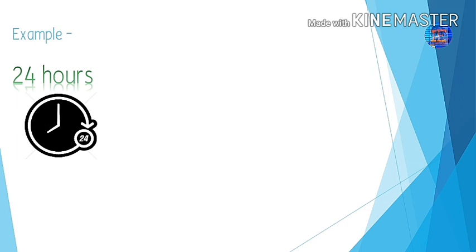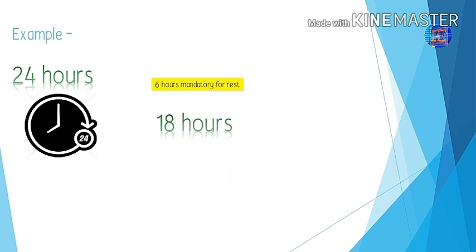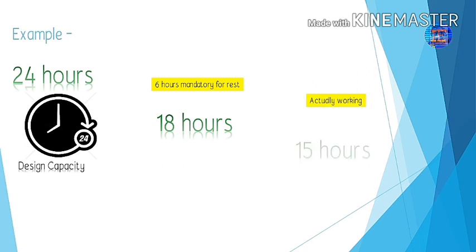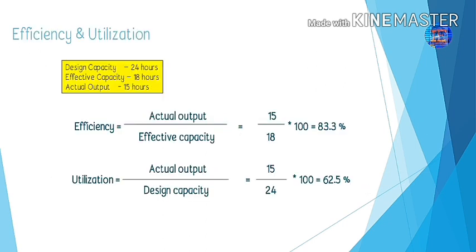For example, we have 24 hours in a day — that is the design capacity. If we have six hours mandatory for rest, we are left with 18 hours, so those 18 hours is our effective capacity. If we are actually working only 15 hours, that 15 hours is our actual output.